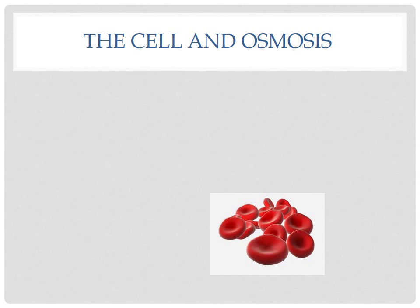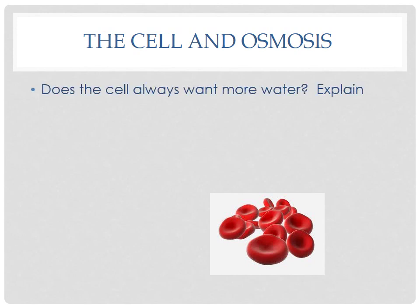Does the cell always want more water? All cells need water to live and function, however too much water can cause an animal cell to swell up and eventually burst and die. The cell membrane is permeable to water, so water can go in and out. If there's too much water inside, it moves to the outside. When blood goes through the kidneys, excess water is removed through urination. Cells need just the right amount of water — not always more.